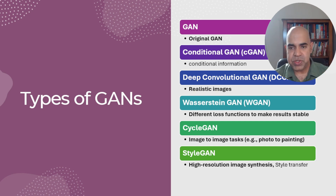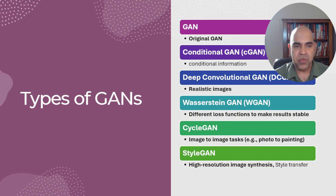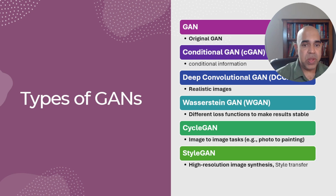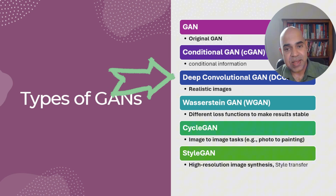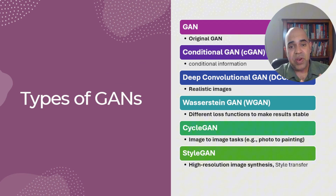In an ordinary GAN, you could train with training data of dogs, cats, and many other animals, and when you ask it to generate an image, it could be any or a mix of multiple animals. But in a Conditional GAN, you can specify from what category or class the generator should generate images. Then we also have Deep Convolutional GAN, or DCGAN. DCGANs utilize convolutional layers in the generator and discriminator, making them particularly powerful for generating realistic images.